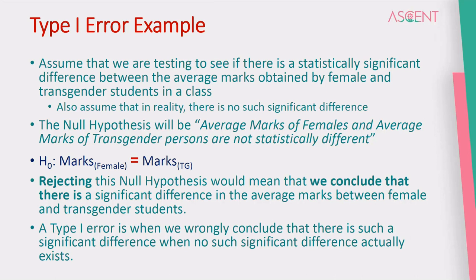Let's take a look at the mathematical notation. Marks of females is equal to marks of transgender students — we can mathematically express and test this null hypothesis.